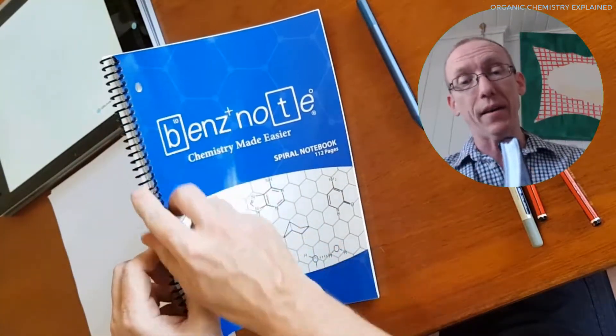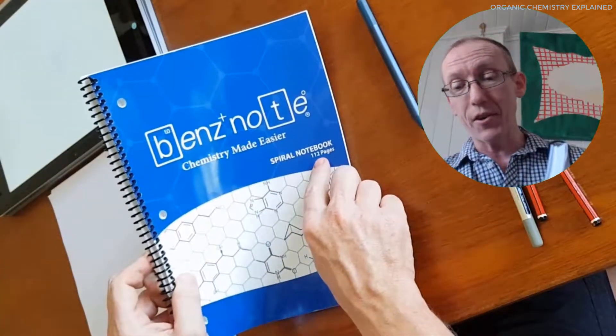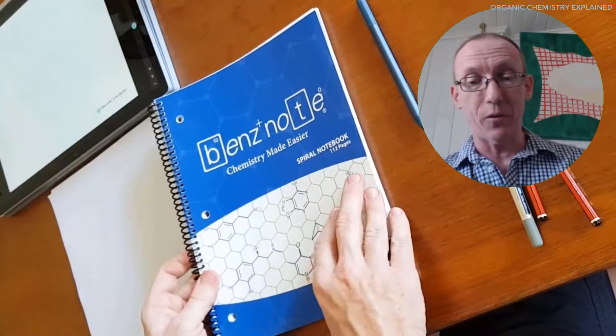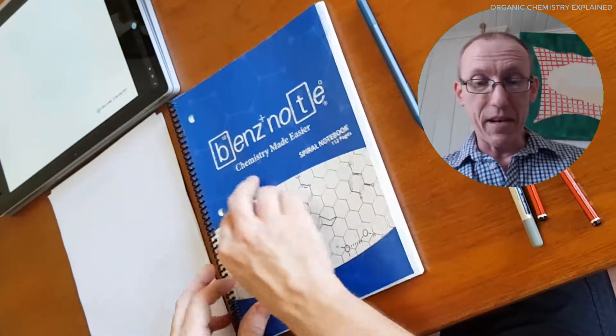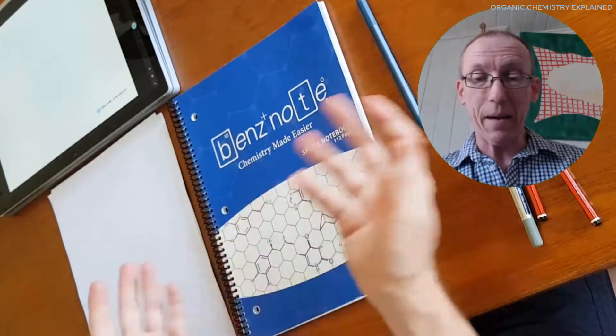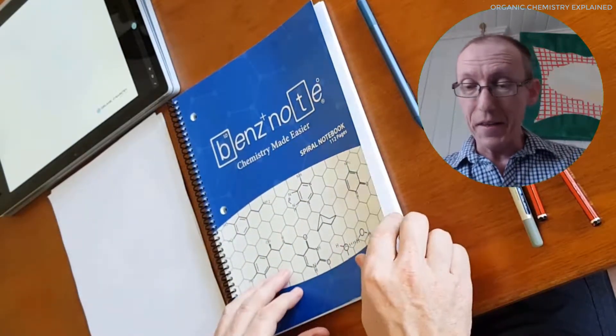As I said, it's spiral bound so it's 112 pages and it's in a letter format and as you can see it's for chemistry made easier.